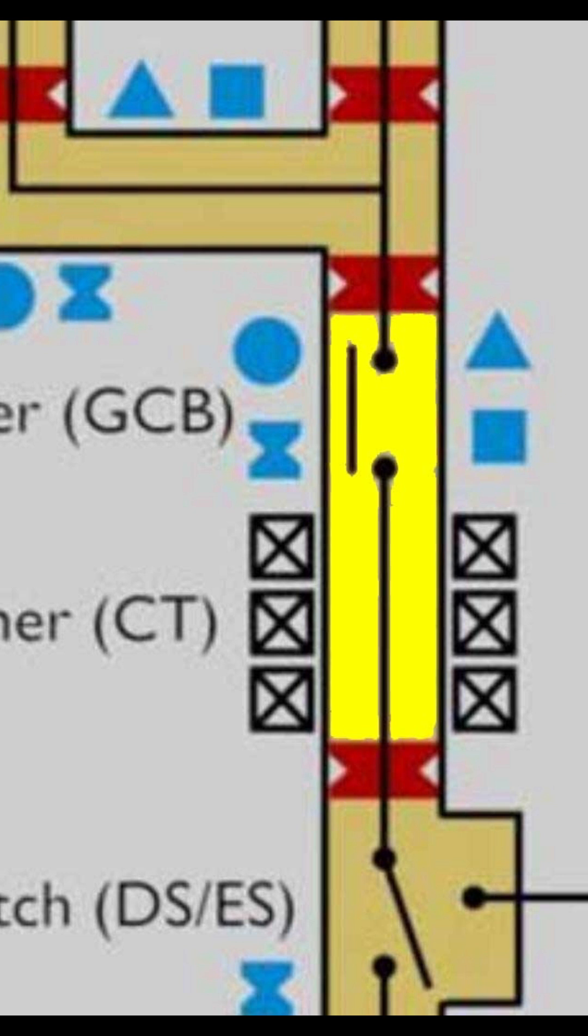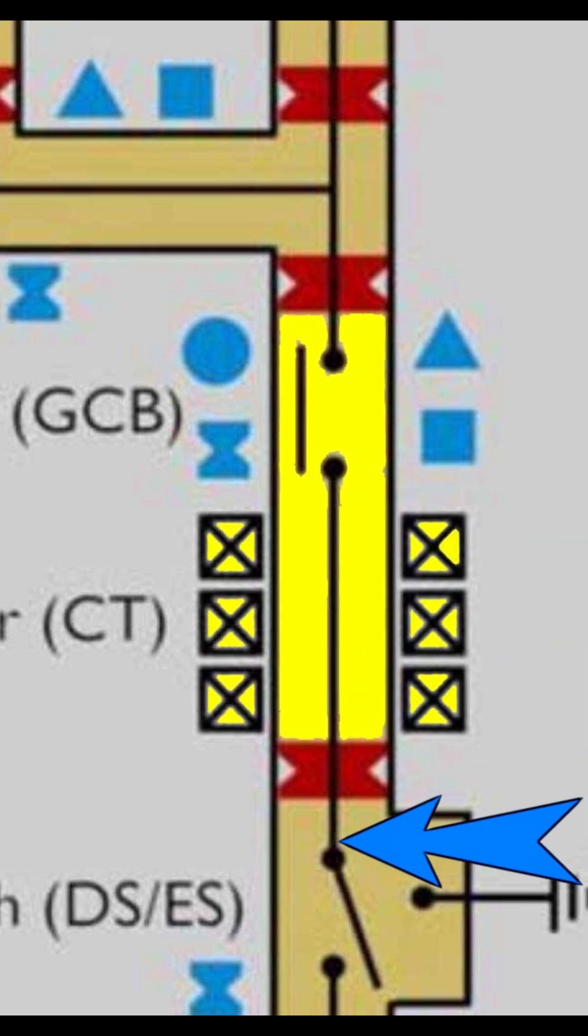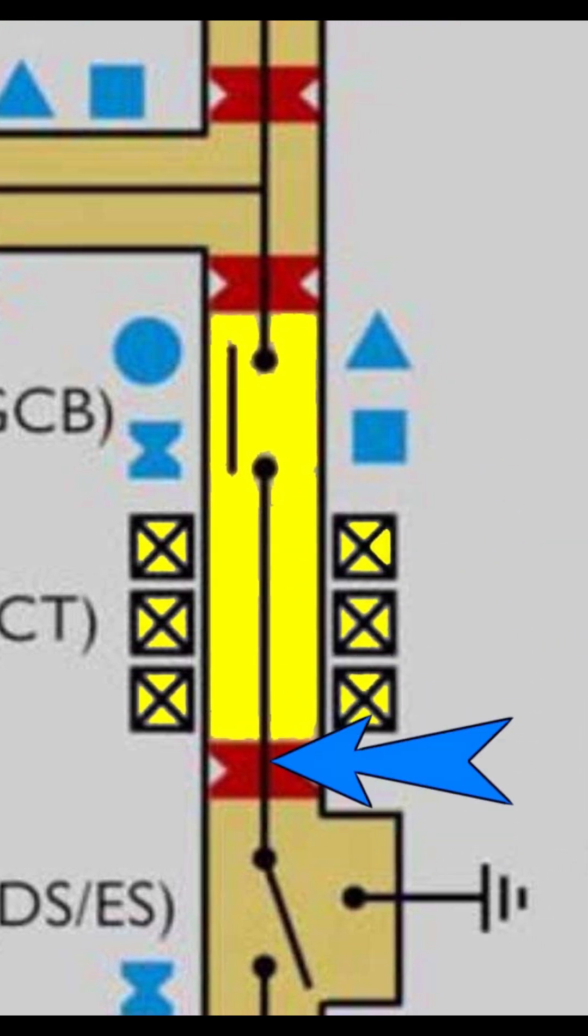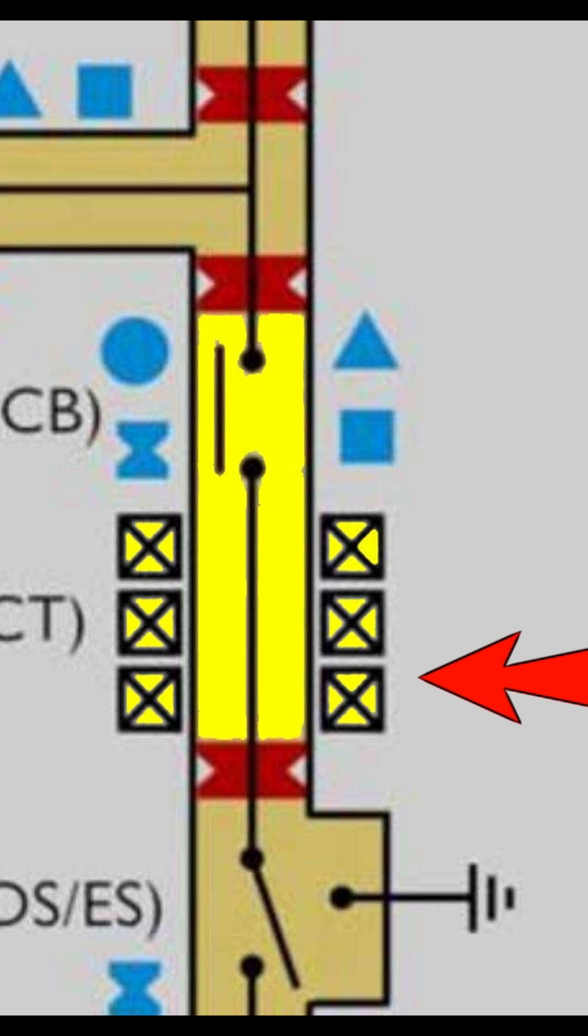In GIS, we generally do not use a gas-insulated CT. Instead, we just place the core of the CT around the GIS compartment. So the CT core surrounds the compartment. This conductor will behave like the primary of that CT, and these are the secondary windings on the cores.